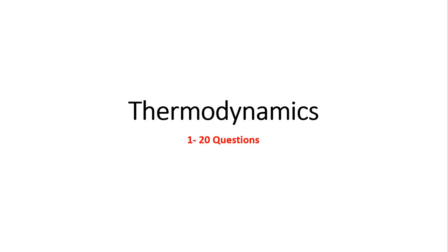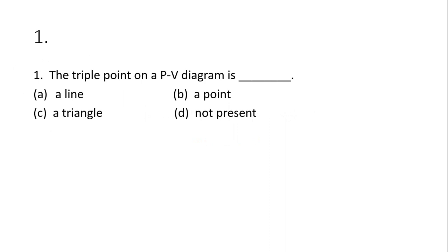Let's get started. The first question: the triple point on a PV diagram is — a line, a point, a triangle, or not represented? Whenever I show a question, pause the video and try to solve it yourself. If you're unable to solve it, unpause and you'll get the answer. If you don't use your brain, it won't be as helpful.